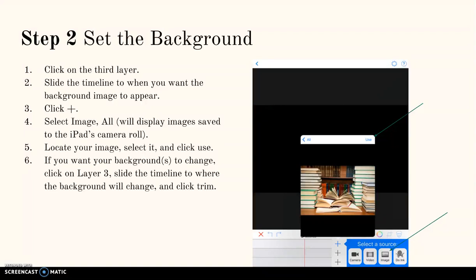If you want your backgrounds to change, click on layer 3, slide the timeline to where the background will change, and click trim. Then repeat this step if you want to add additional images.